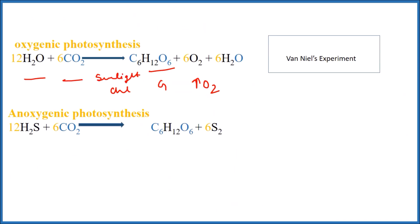Let's understand this with the photosynthesis reaction: 12 molecules of water plus 6 molecules of carbon dioxide will form 1 molecule of glucose, 6 molecules of O2, and 6 molecules of water, in the presence of sunlight.